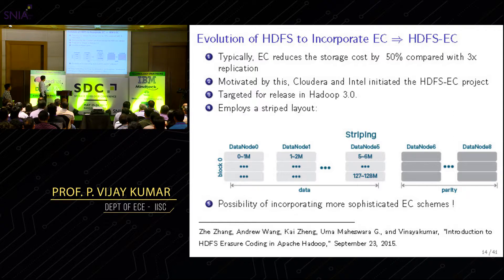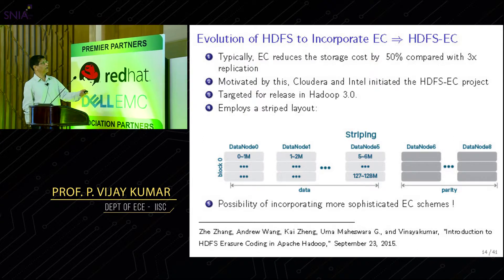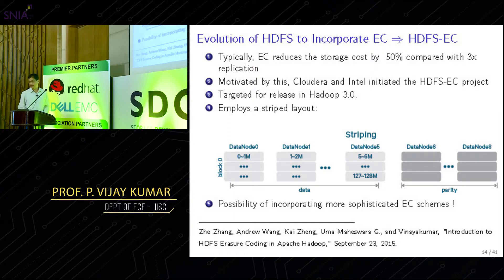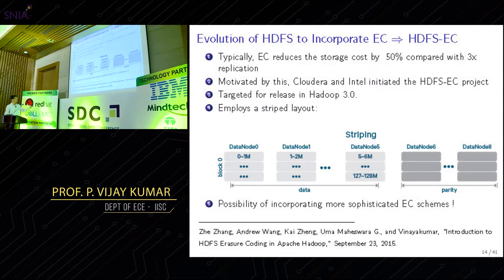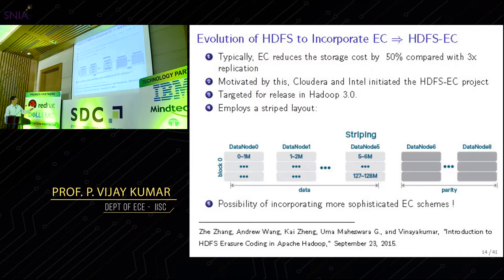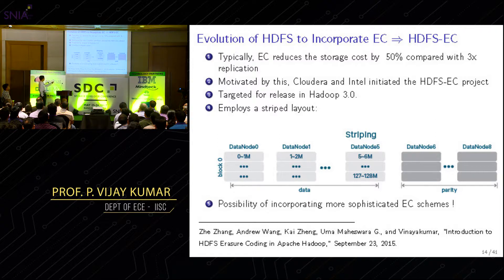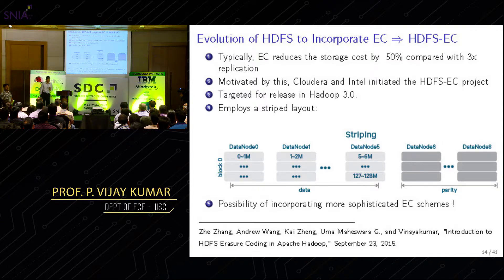In the striped layout, instead of storing data sequentially column by column, you store it horizontally. The idea is that no matter how big your file is, you're ready to encode as soon as you have a minimum of six megabytes of data. You don't have to wait to fill everything before generating parity — you can do it row by row. That's the striping approach they've adopted. Their default code is a (6,3) Reed-Solomon code, and they've stated interest in incorporating more advanced techniques in the future, which is very encouraging.